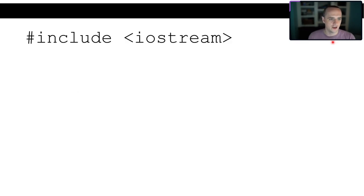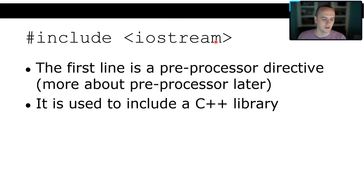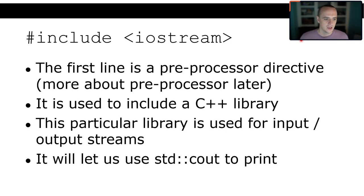The first line, '#include <iostream>', is a preprocessor directive used to include a C++ library — similar to importing in Python or Java. iostream stands for input/output stream; this library gives us access to std::cout, which is how we print things in C++.